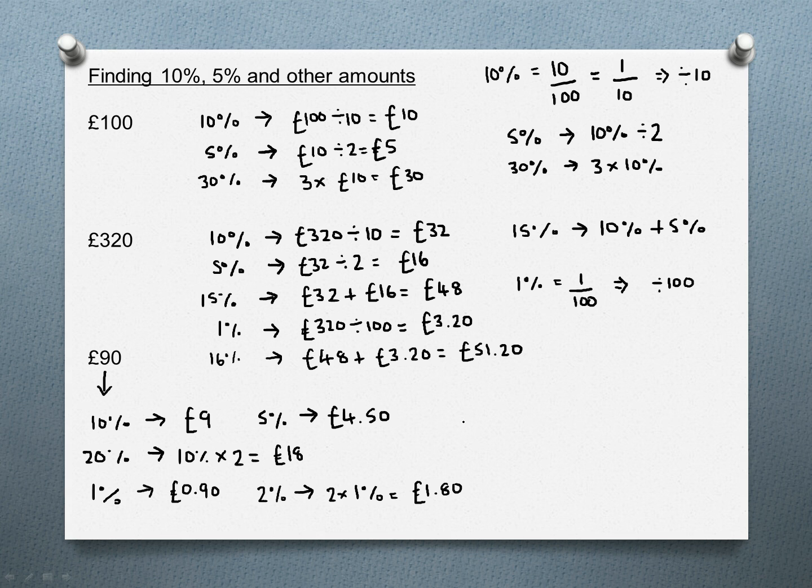From this now, we could work out 23% of 90 pounds, which looks like quite a complicated question to do without your calculator. But this is just made up of 20% plus 2% plus 1%. So that would be 18 plus £1.80 plus 90p. Altogether, 23% of 90 pounds is going to come to £20.70. You can see there we can do something that looks like a very complicated question without our calculator by breaking it down into smaller chunks. And that's how you work out percentages without using your calculator.